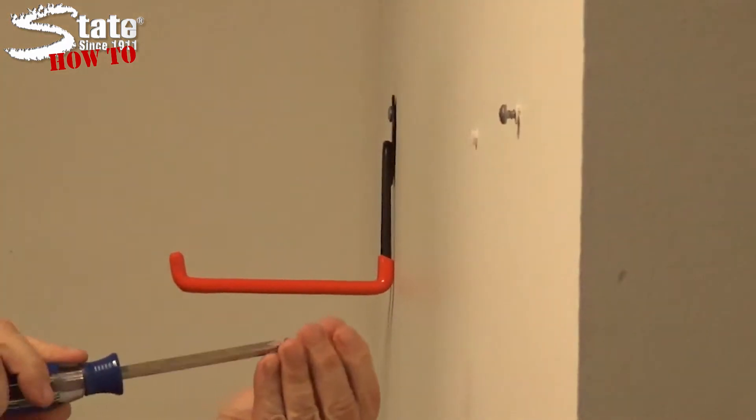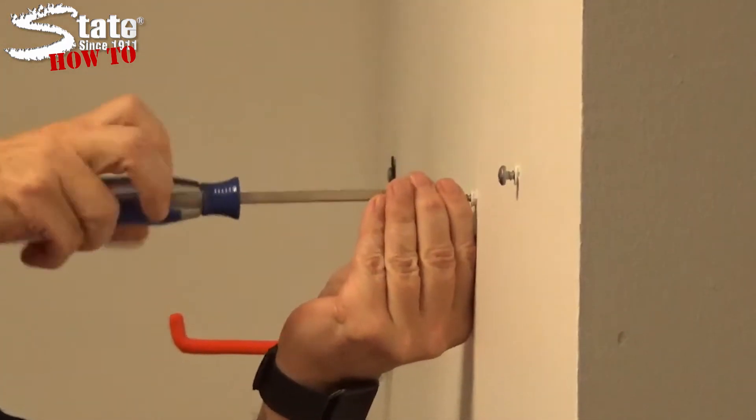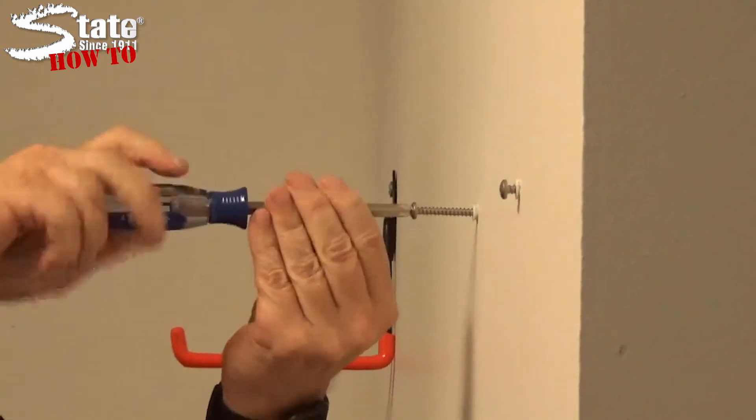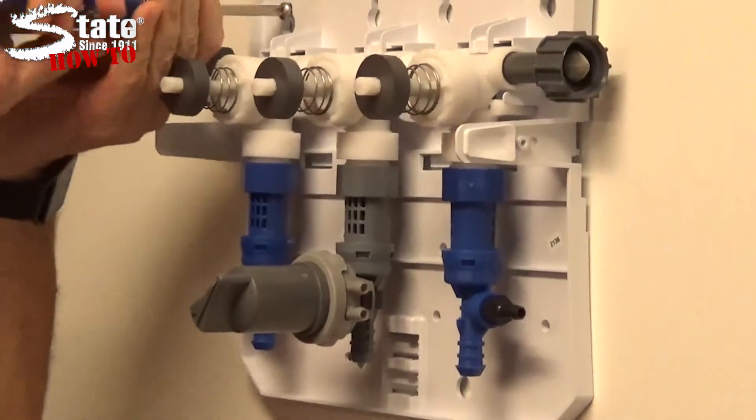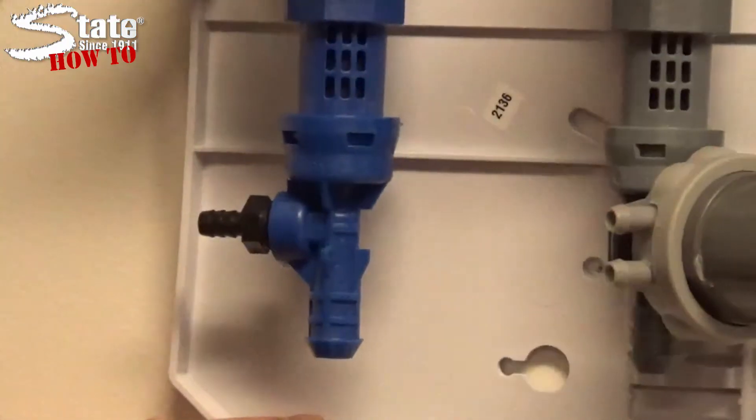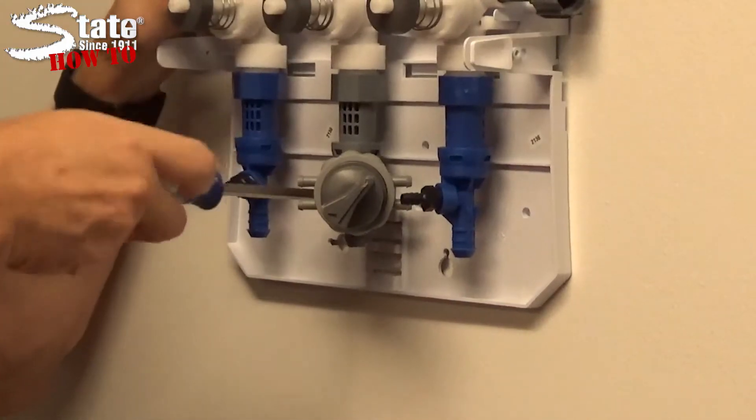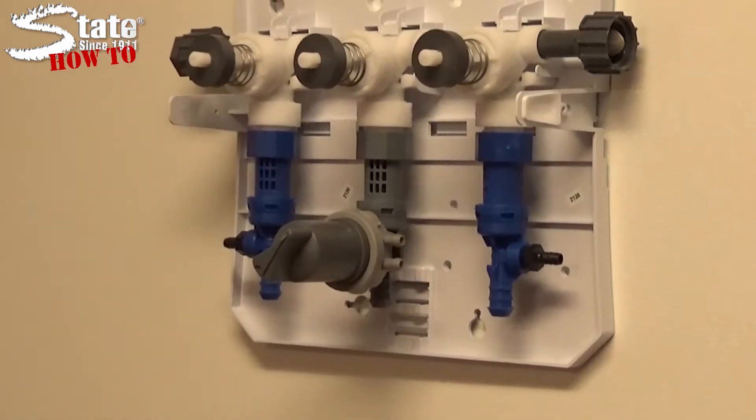Next, screw the provided mounting screws into the top two anchors. We recommend using a screwdriver for precise adjustments. Now slide the backplate onto the top mounting screws and ensure your unit is still level. Screw in the third screw to hold your unit in place snugly against the wall.